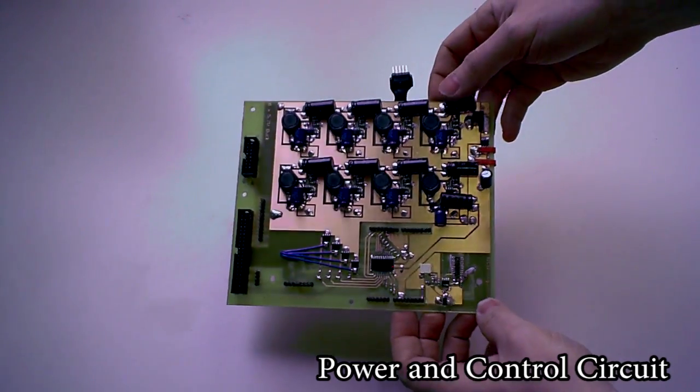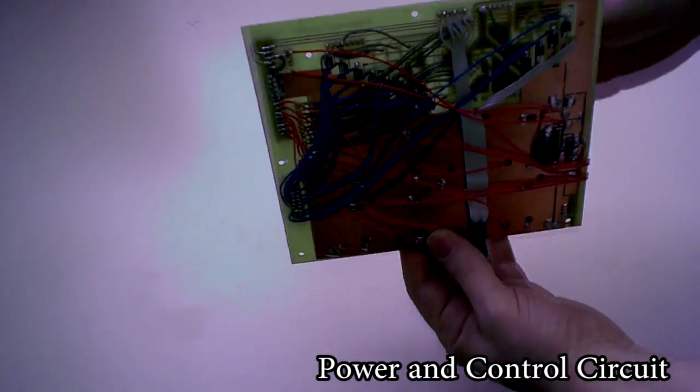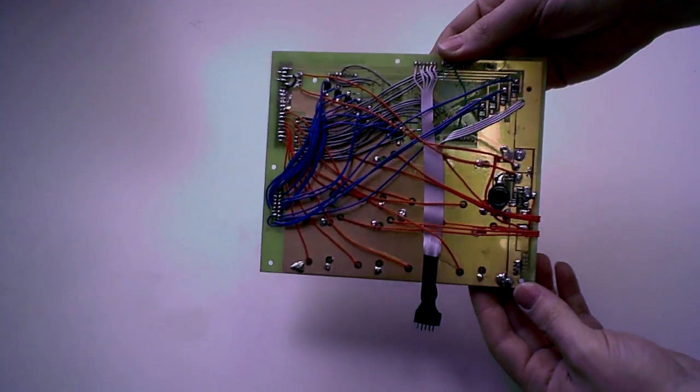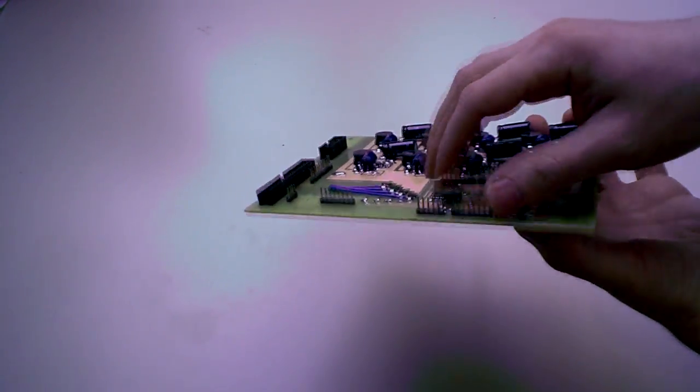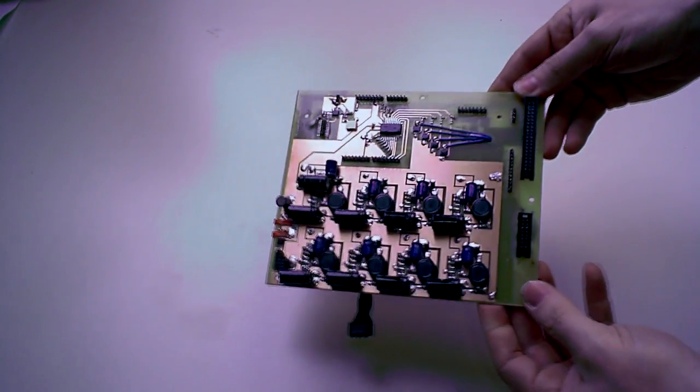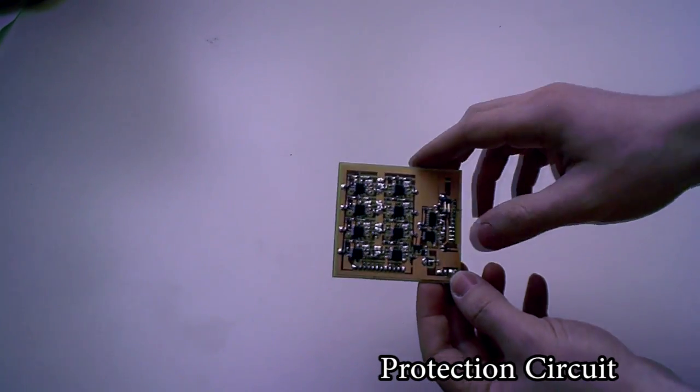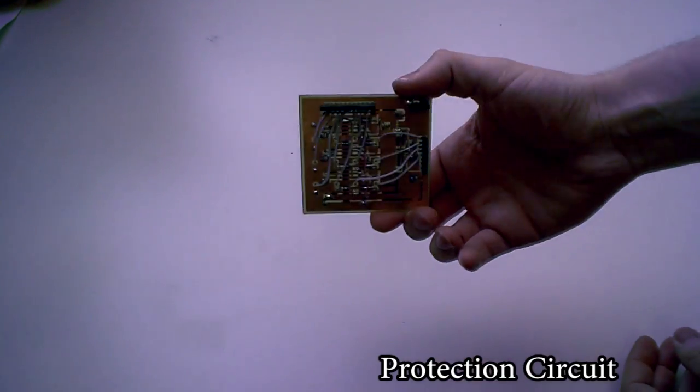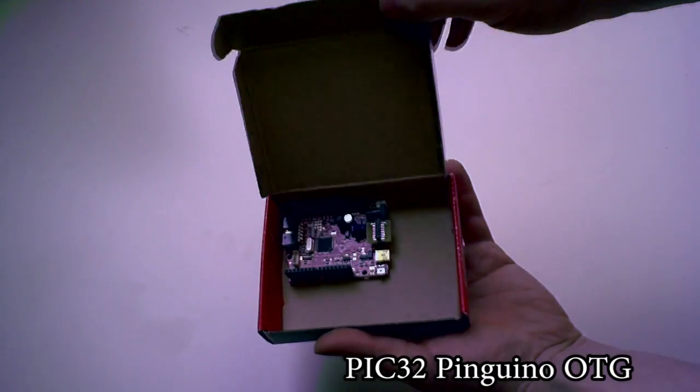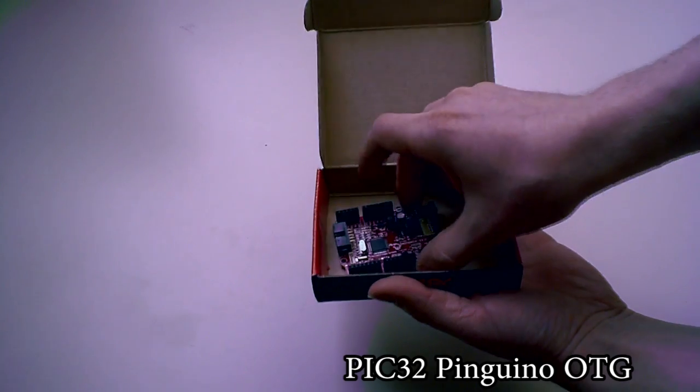The same procedure is repeated for all other PCBs in the spectrum analyzer. As you can see, two layers in the PCB are not always enough, and sometimes you need to make connections using some extra wires. For the microcontroller, I'm using a Penguino development board.